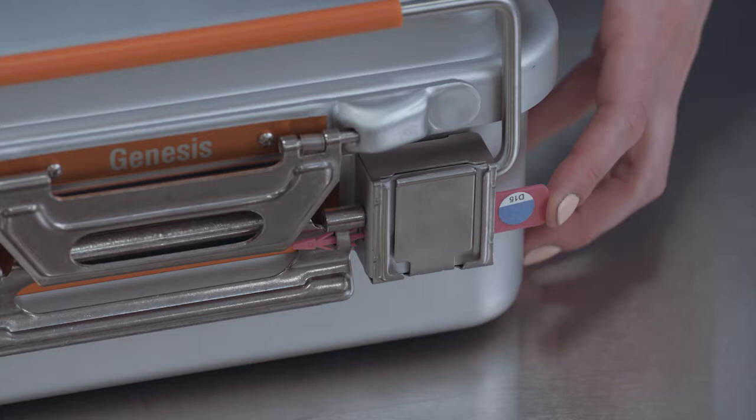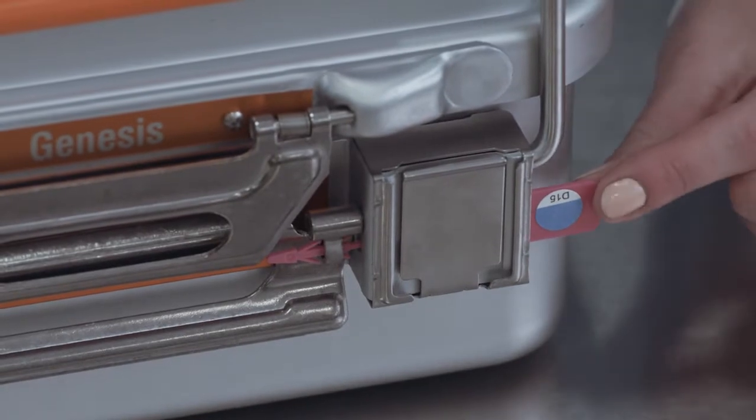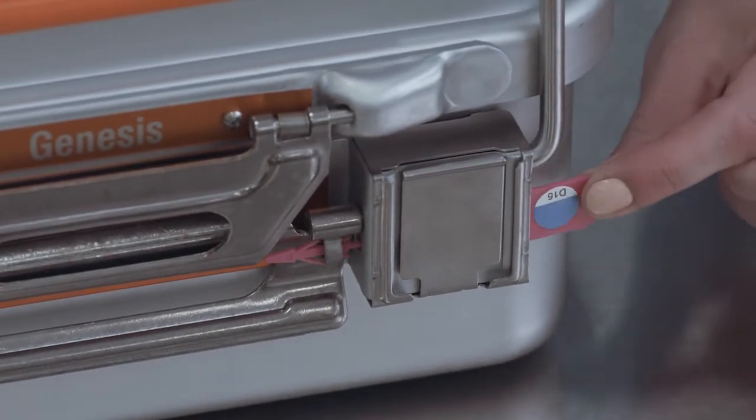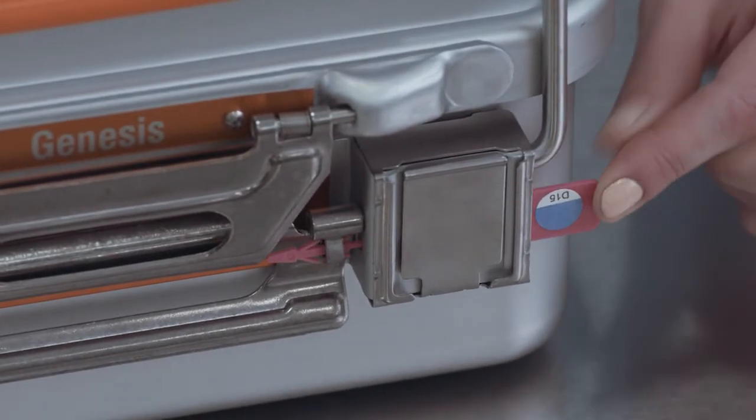Check for the physical integrity of both tamper-evident arrows. Grasp the arrow on the chemical indicator dot end and gently pull. If the arrow slips out of the channel, consider the contents of the container not sterile.